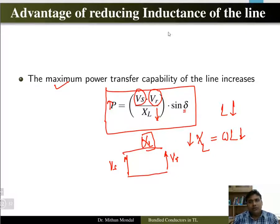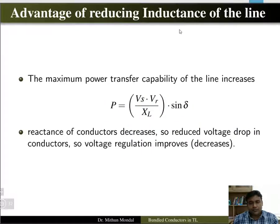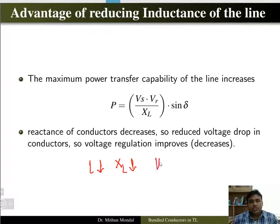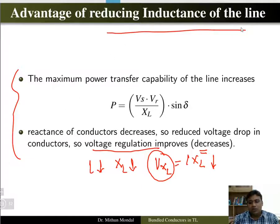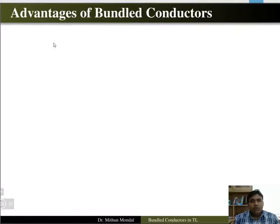If we reduce the inductance of the line, XL is reduced. If XL is reducing, the voltage drop associated with XL — that is I × XL — will also drop. If the voltage drop due to inductance decreases, the voltage regulation will improve and transmission efficiency will be better.